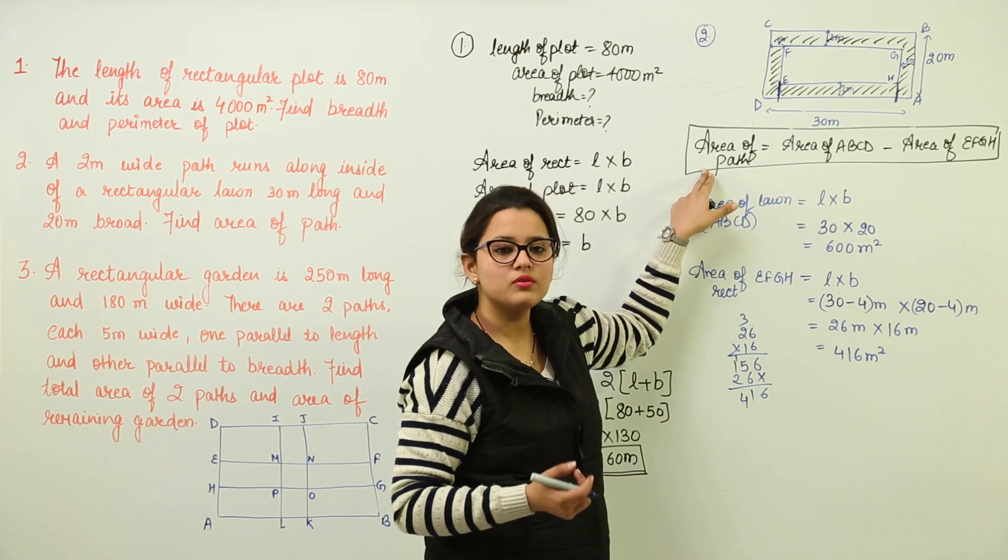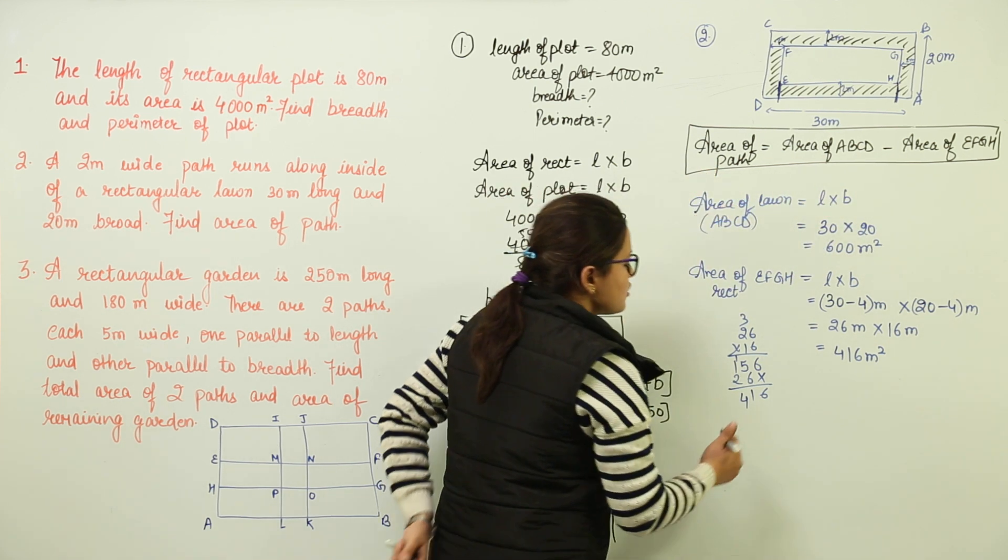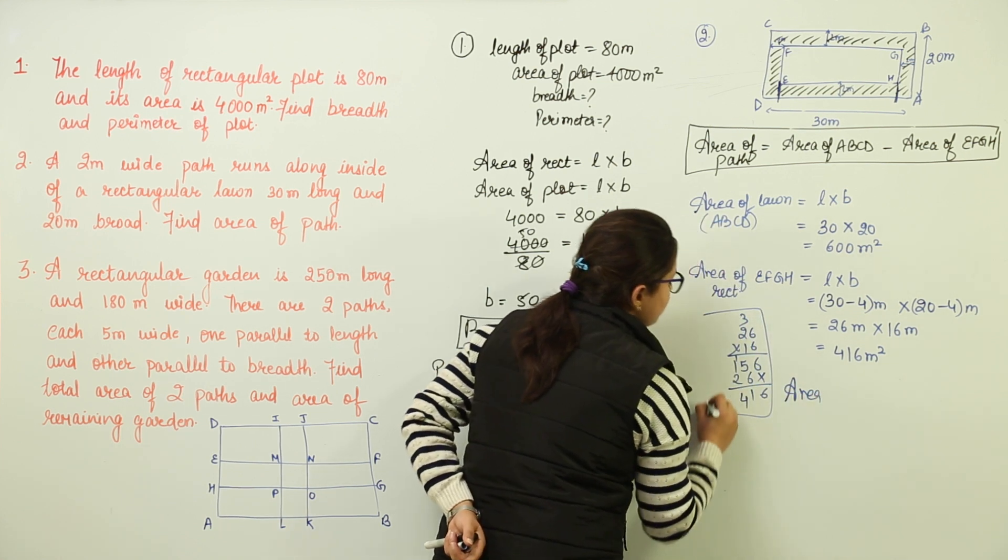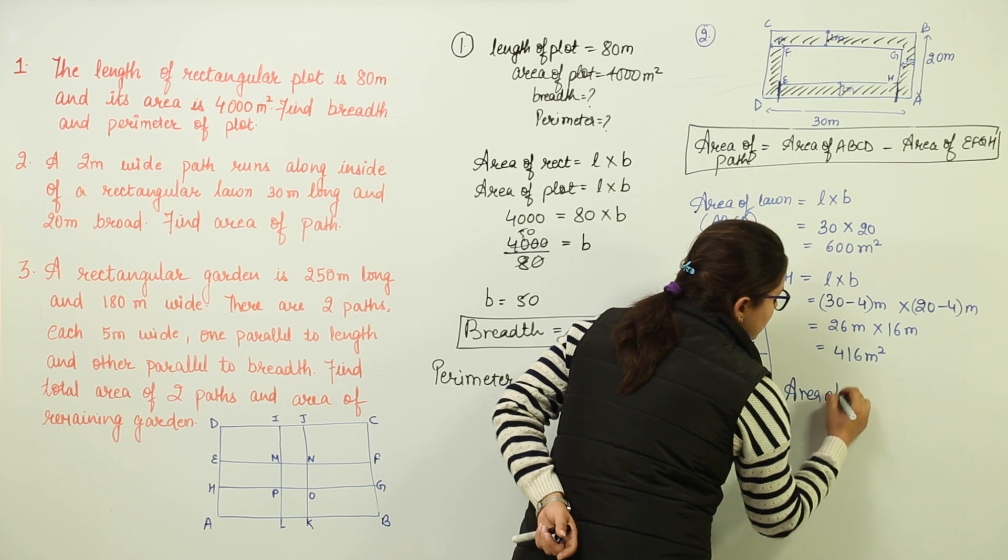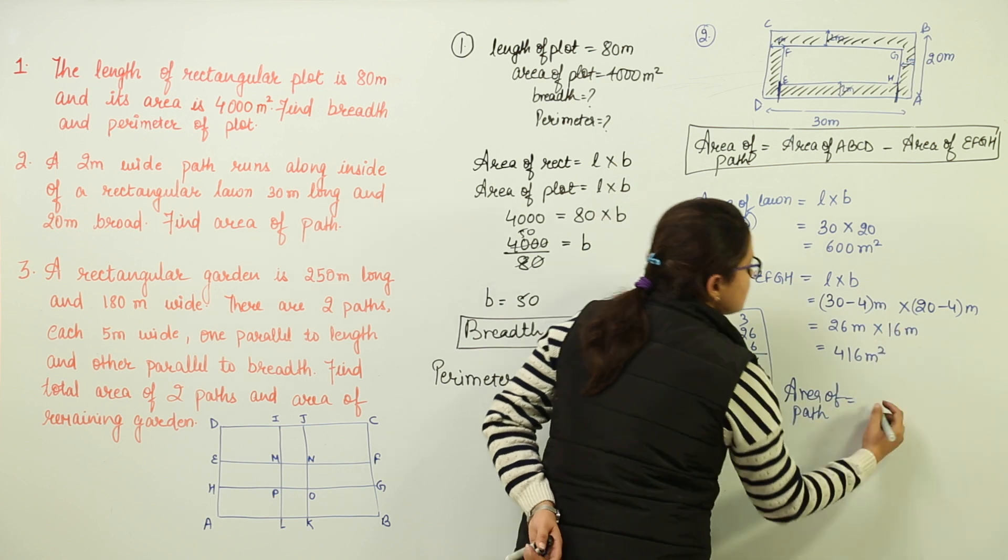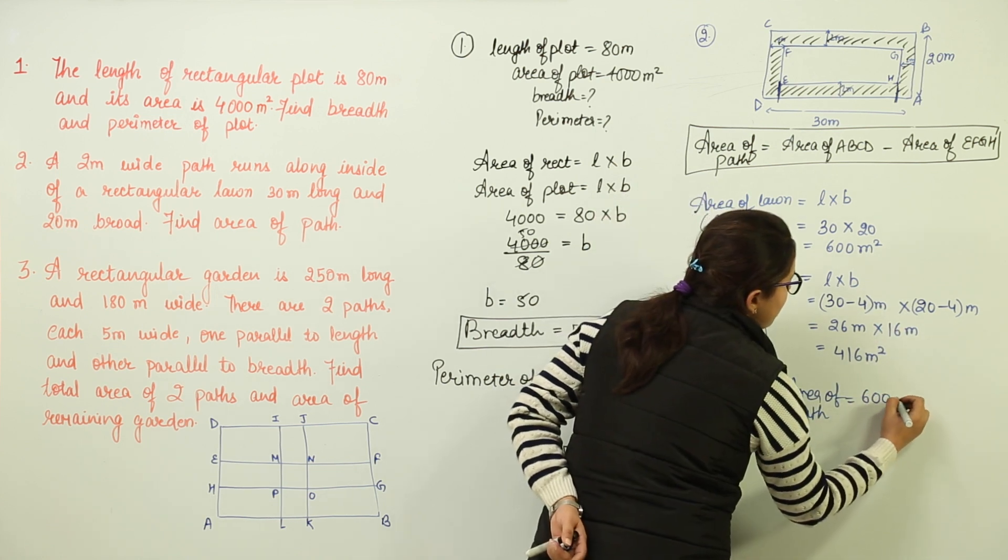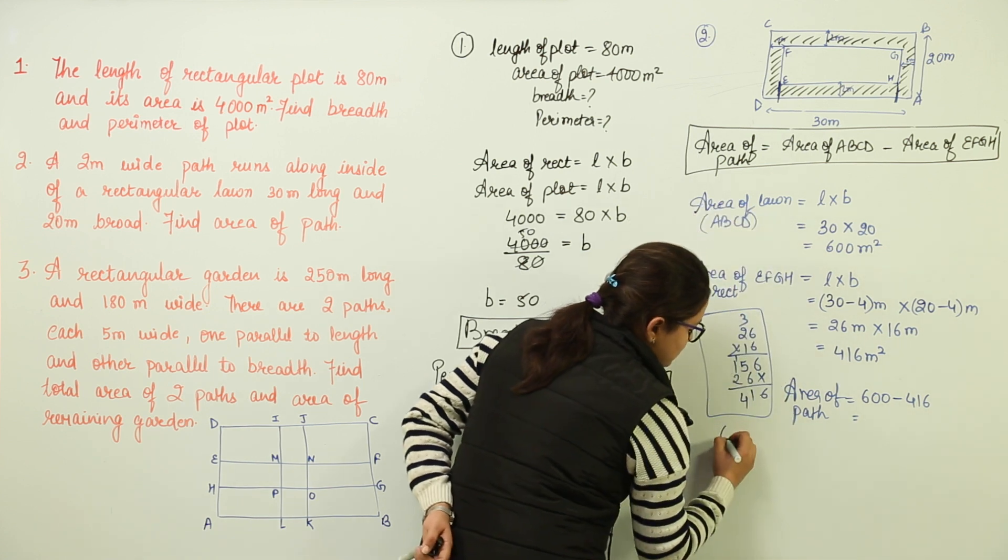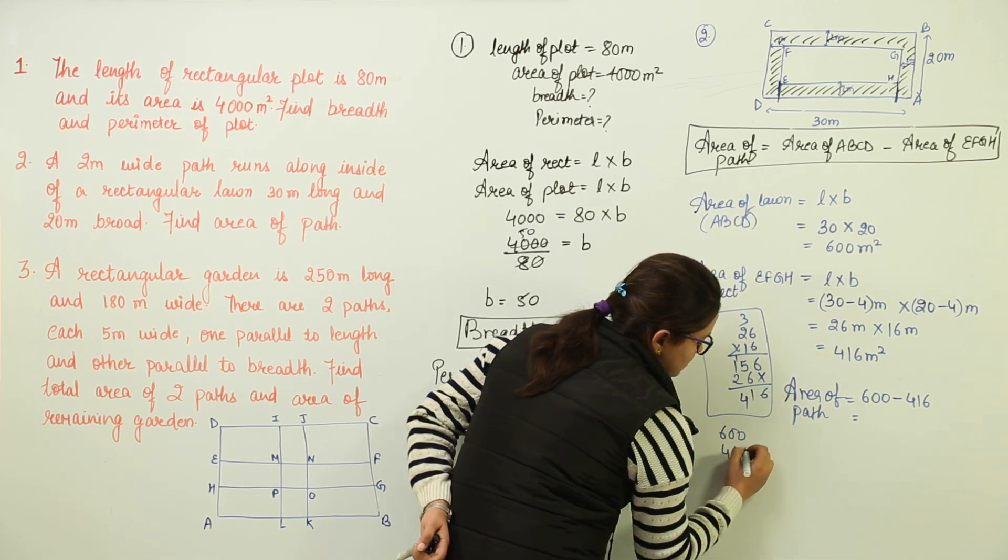The final step would be to find out the area that was required. So we will write over here the area. Let us make it rough. Now the area of path would be equal to the subtraction of both. That is 600 minus 416.